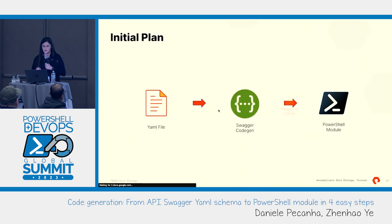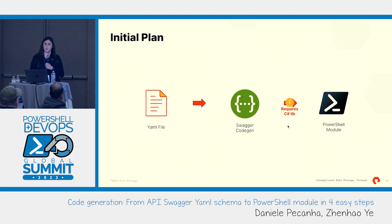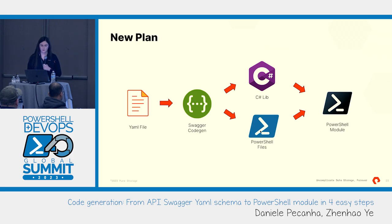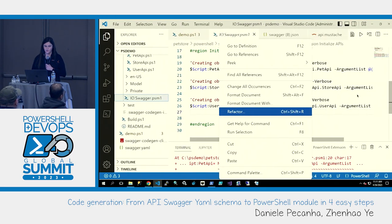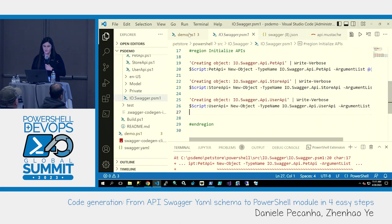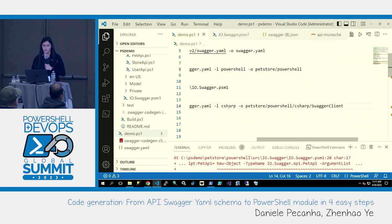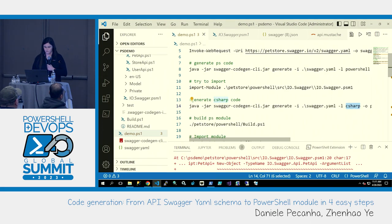Luckily, Swagger CodeGen can also generate the C# library — that's why they have this dependency. So you run Swagger CodeGen with the C# option to get the C# library, and with the PowerShell option to get the PowerShell files. Then you run a build file to combine the two and make your module. Let's give that a try. You generate C# — same options, but now pass 'csharp' as the language.